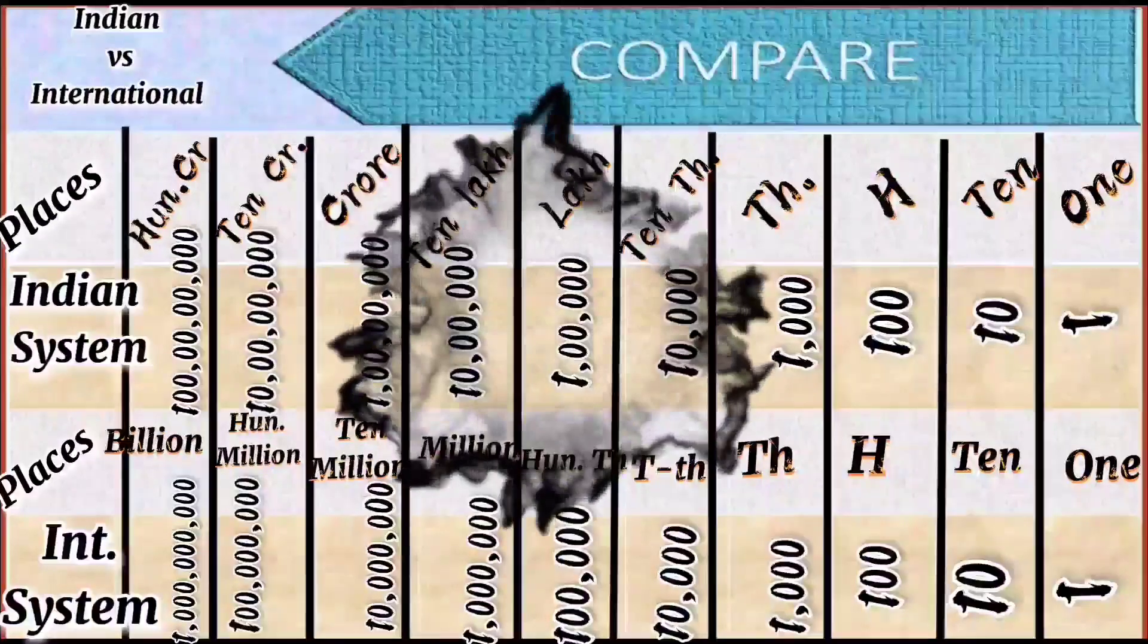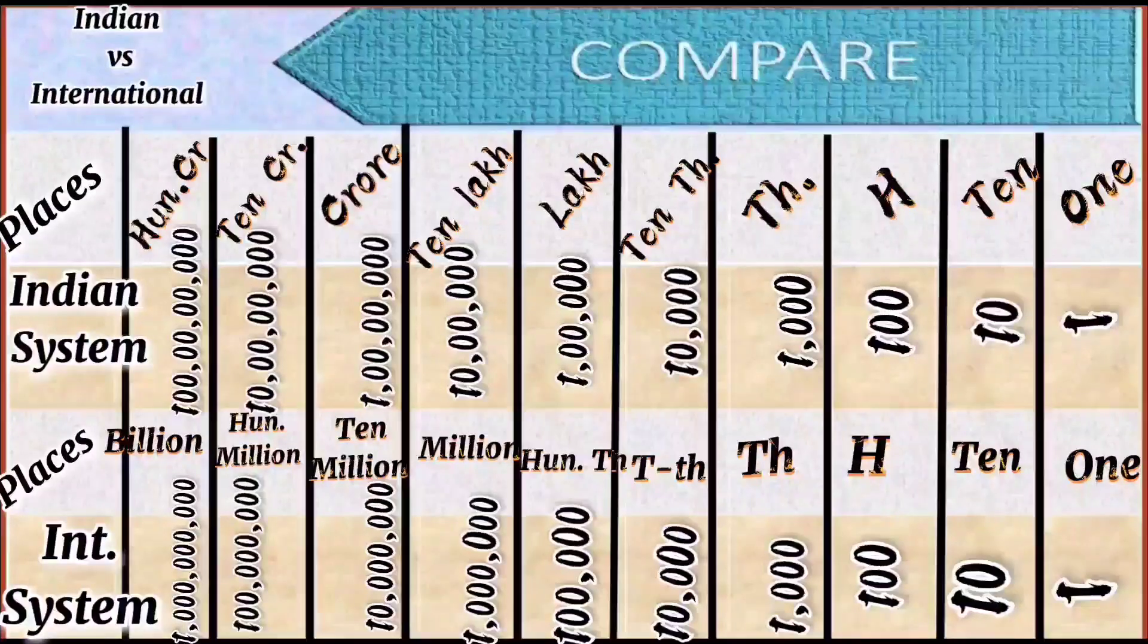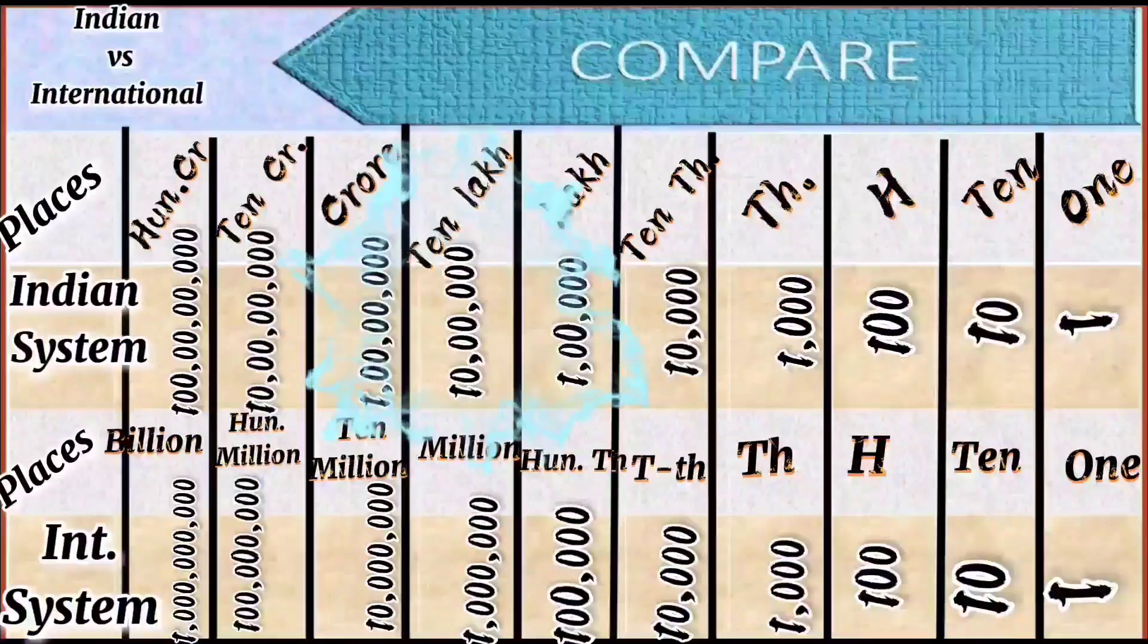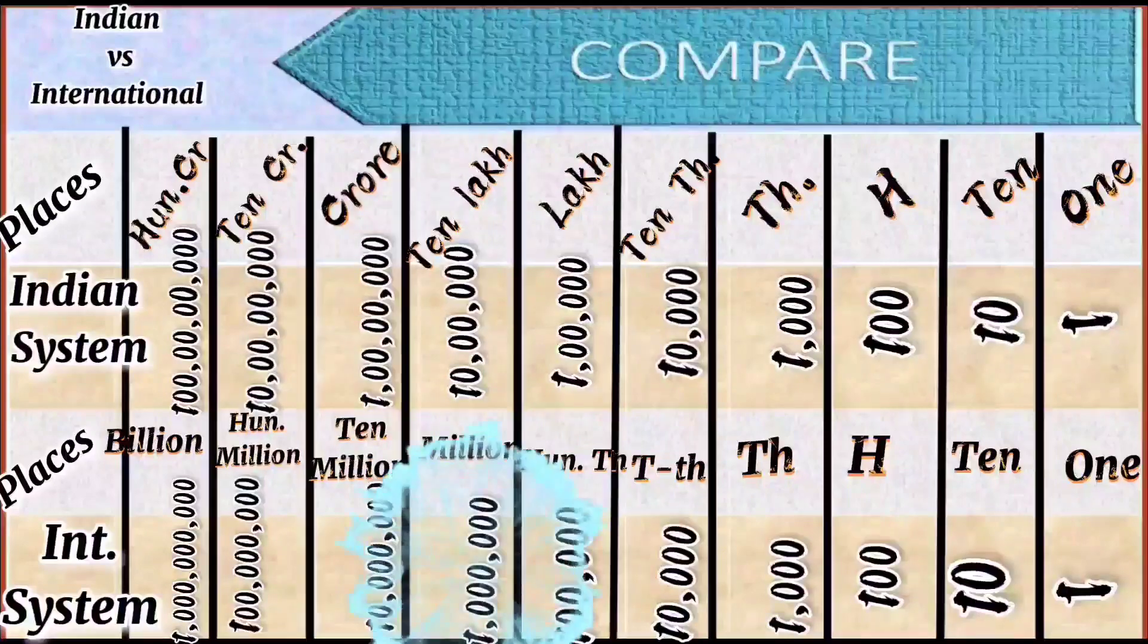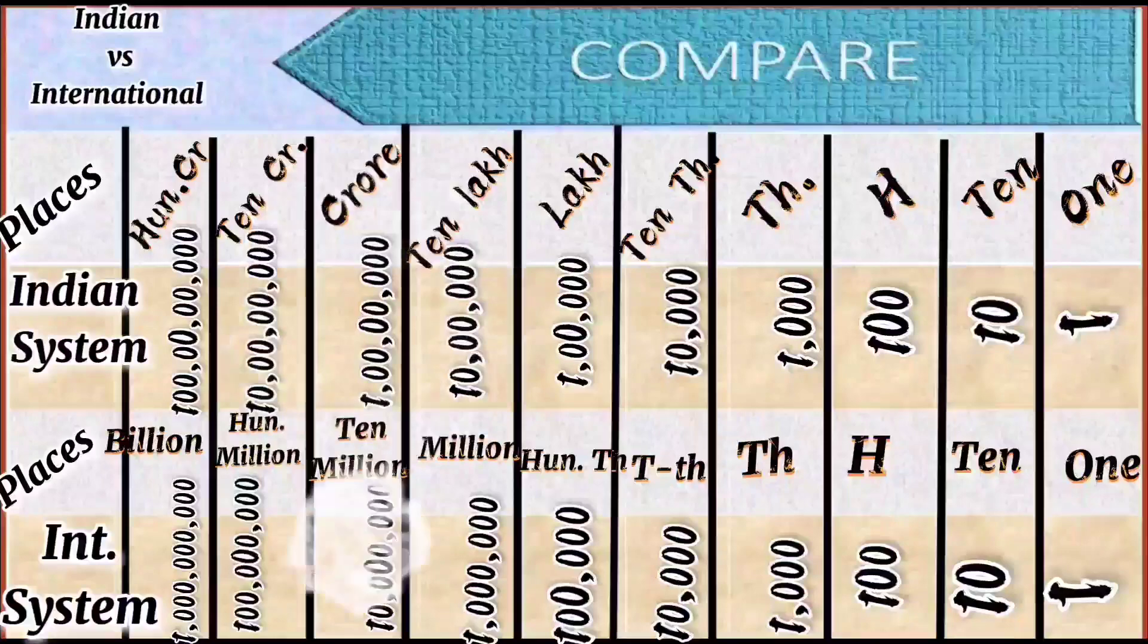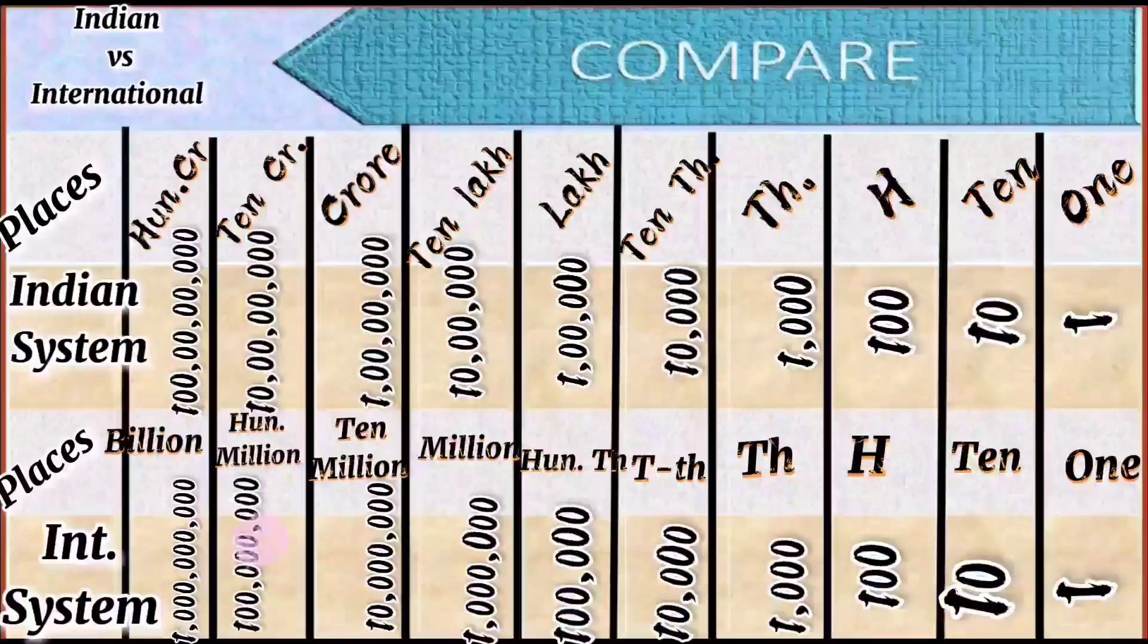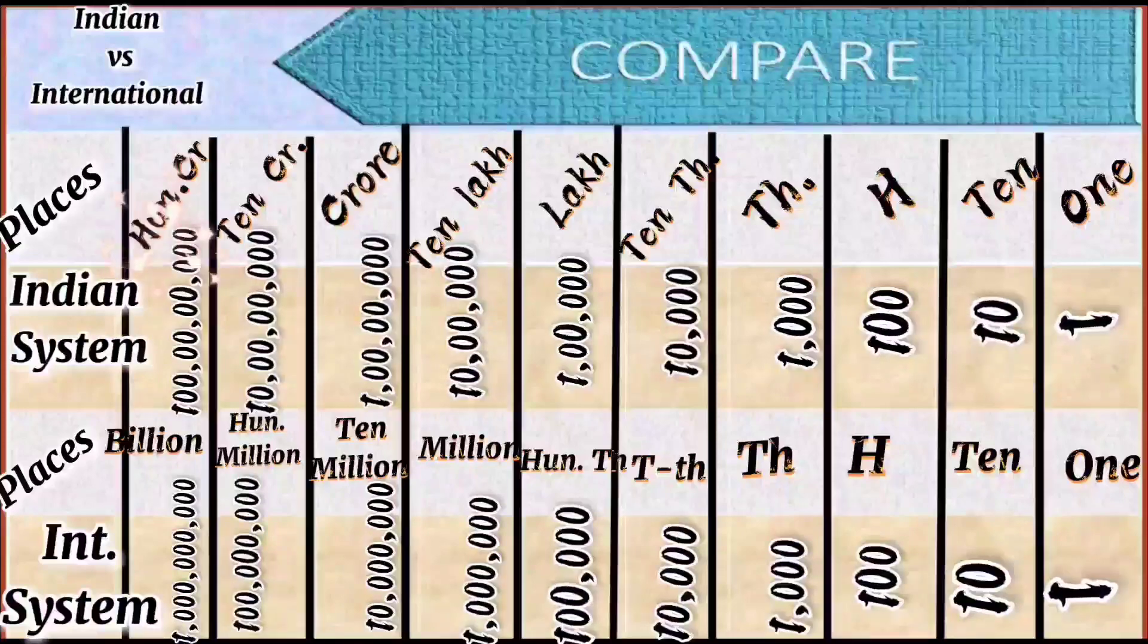One lakh in the Indian system is called 100,000 in the international system. Ten lakh in the Indian system is called one million in the international system. One crore is equal to ten million. Ten crore is equal to 100 million. 100 crore is equal to one billion.